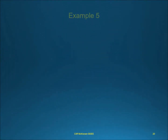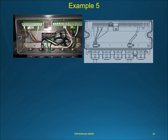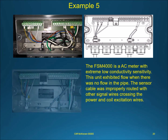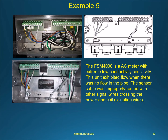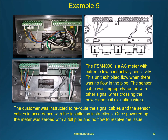The FSM 4000 is an AC meter with extreme low conductivity sensitivity. This unit exhibited flow when there was no flow in the pipe. The sensor cable was improperly routed with other signal wires crossing the power and coil excitation wires. The customer was instructed to reroute the signal cables and sensor cables in accordance with the installation instructions. Once powered up, the meter was zeroed with a full pipe and no flow to resolve the issue.